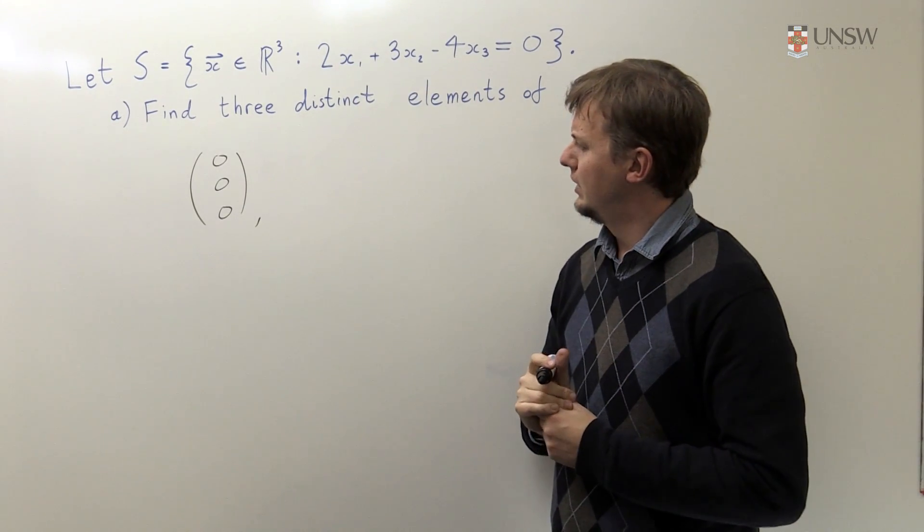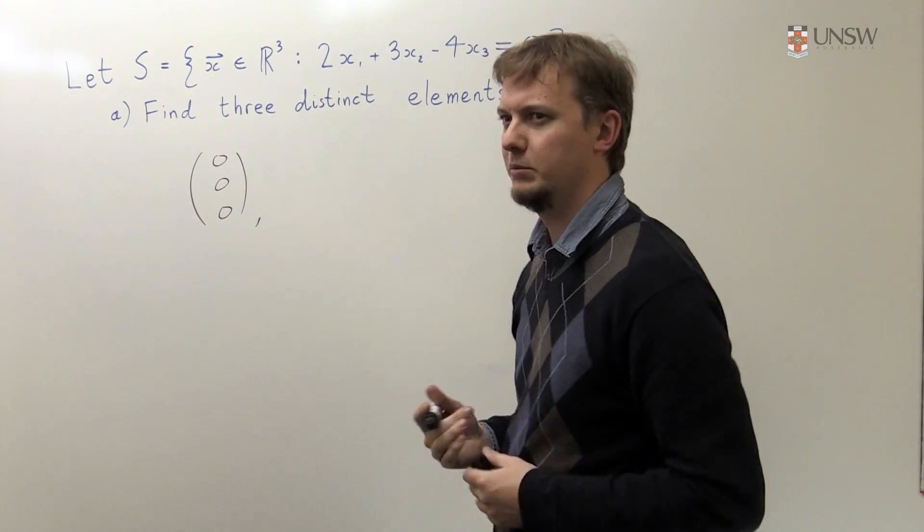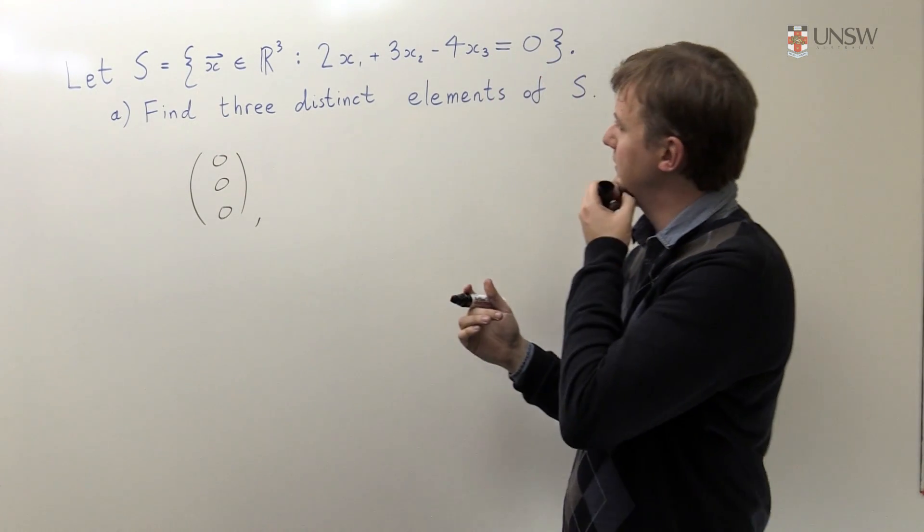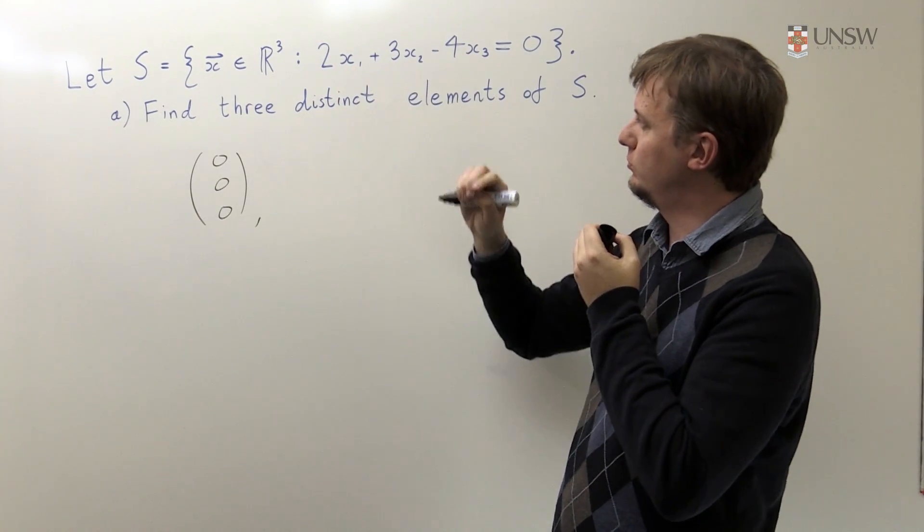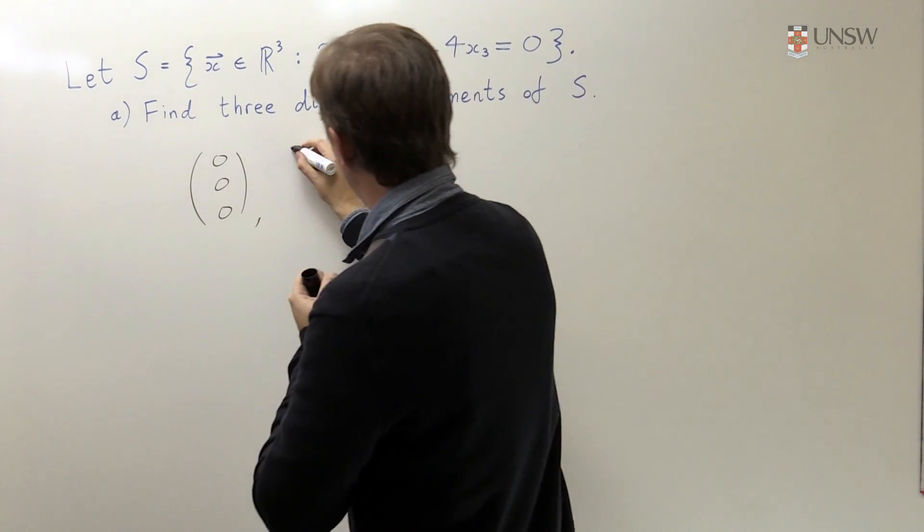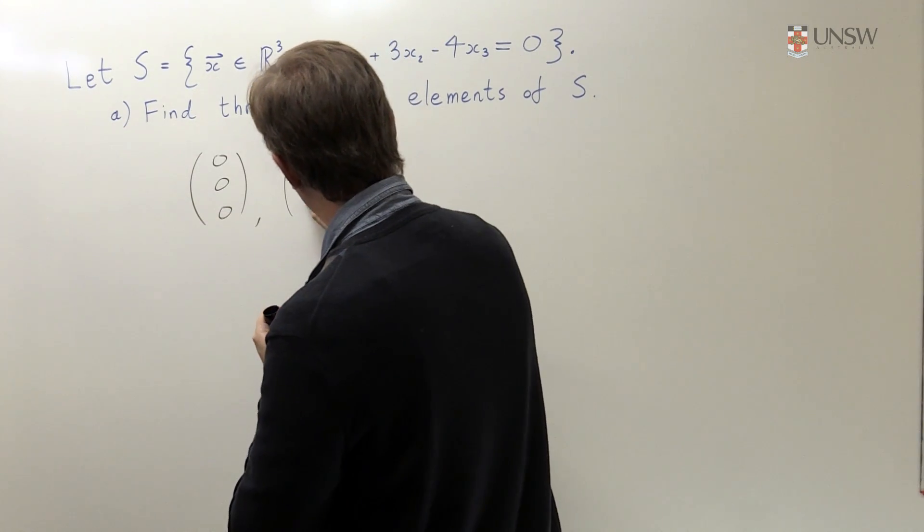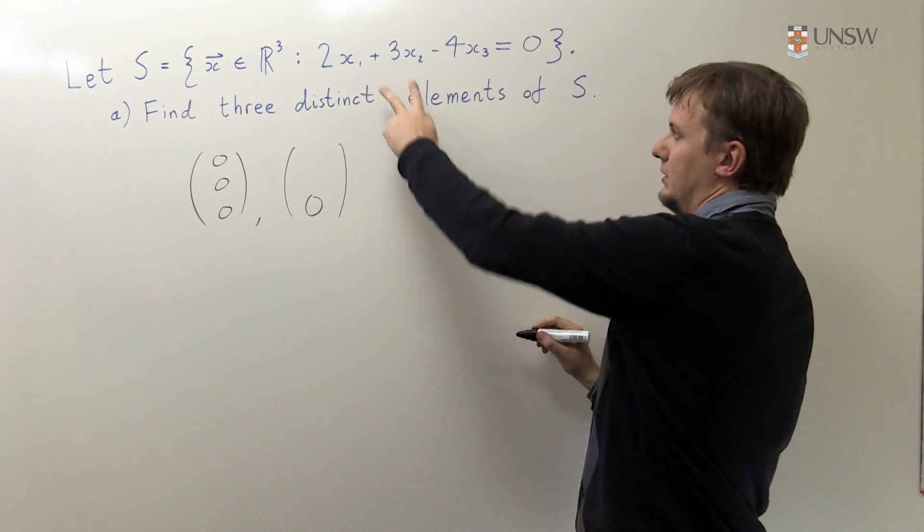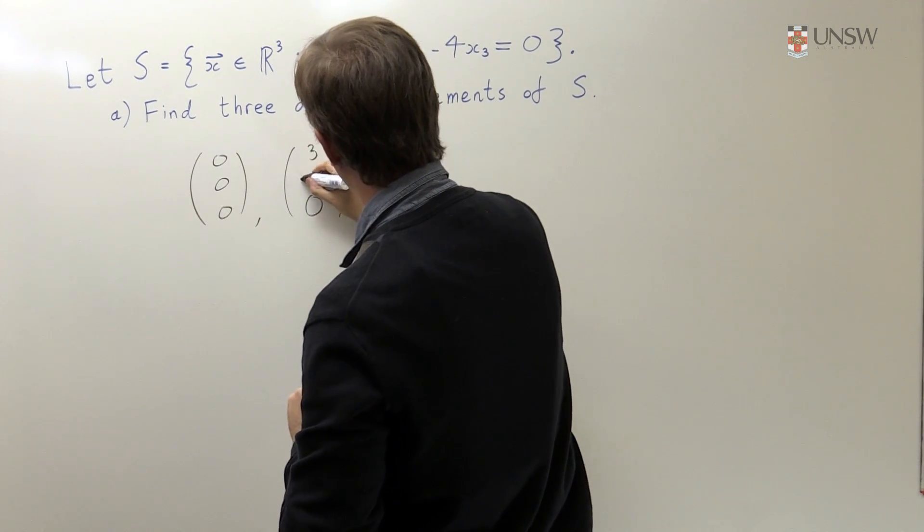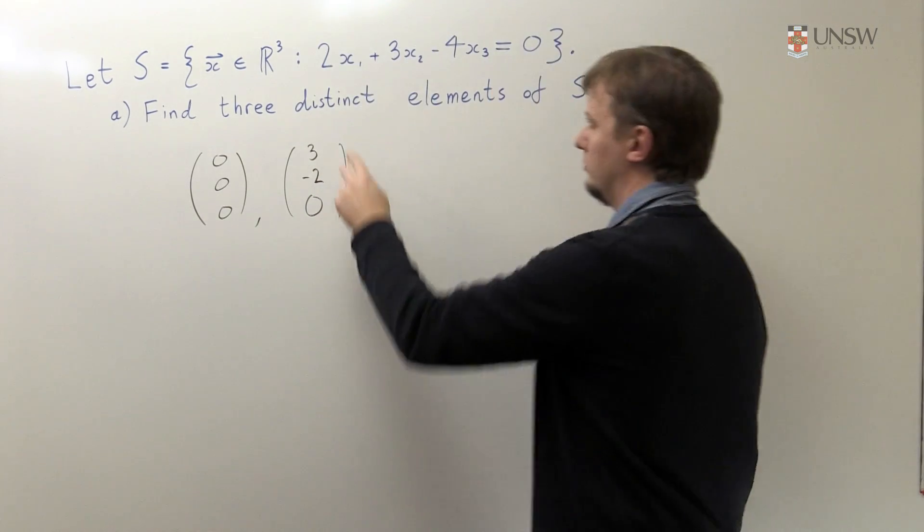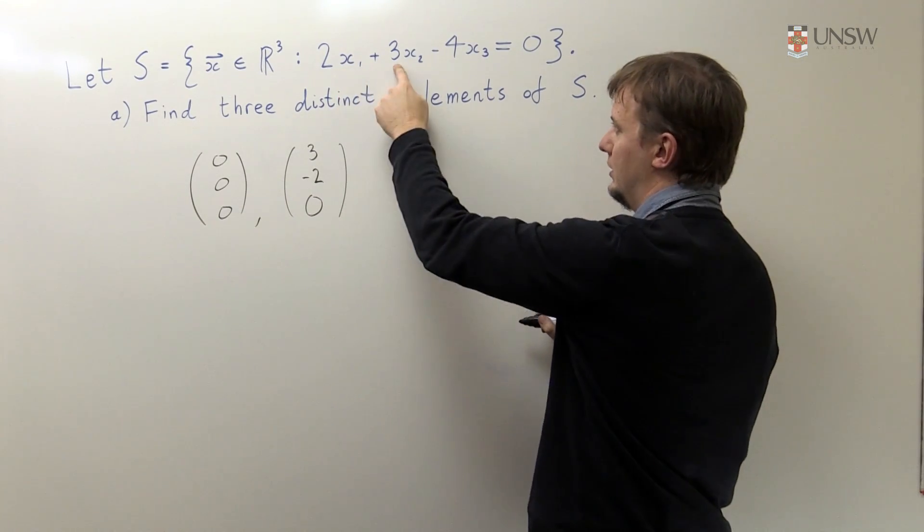What about a second element? Well looking at this, an easy thing to do might just be to balance out these two first terms. So what I mean is, let's take our last term to be zero, and to balance these two out, well, let's take 3 and -2. So 2 times 3 is 6, 3 times -2 is -6.